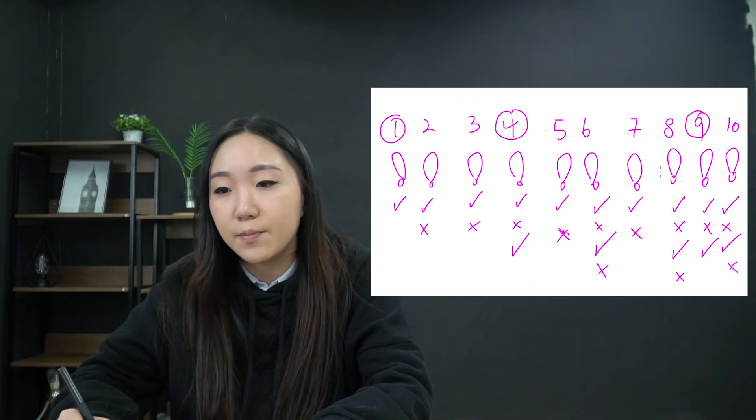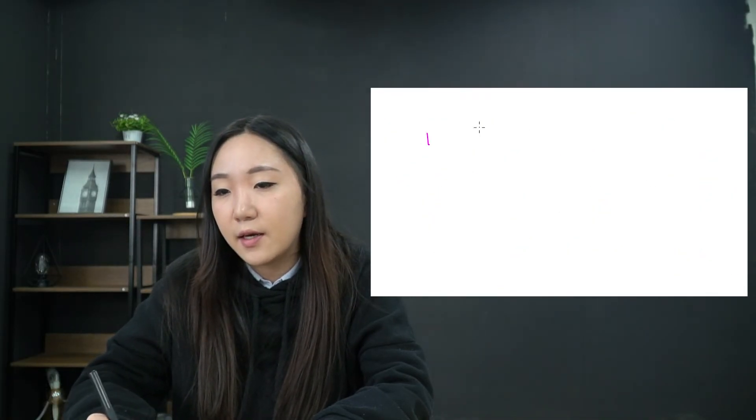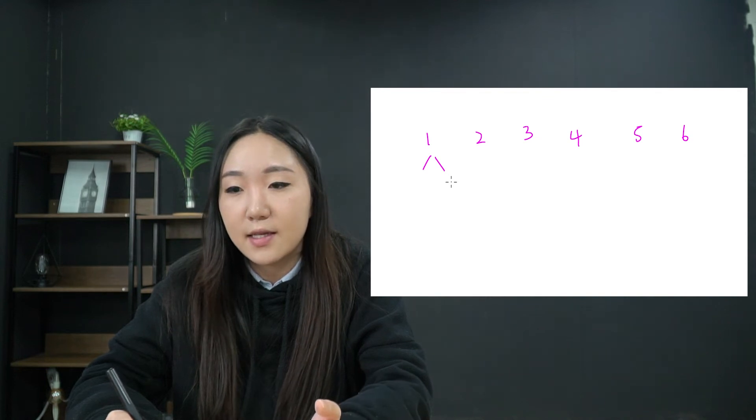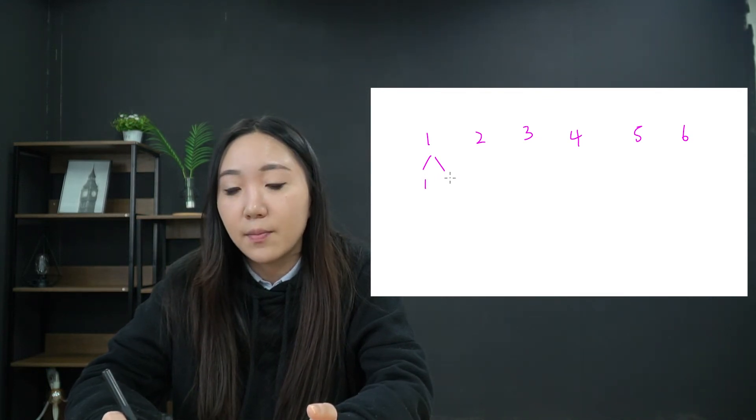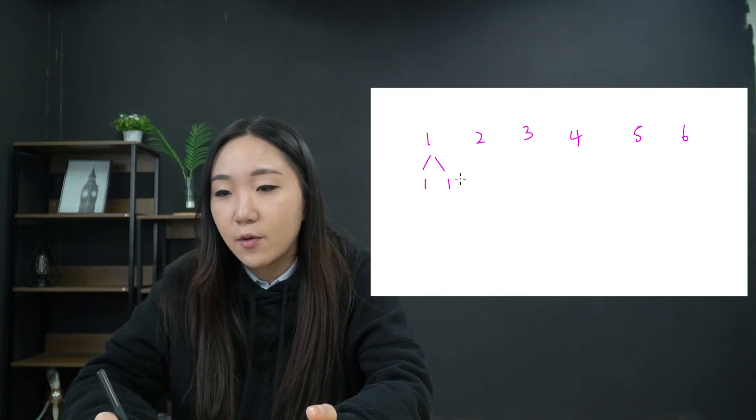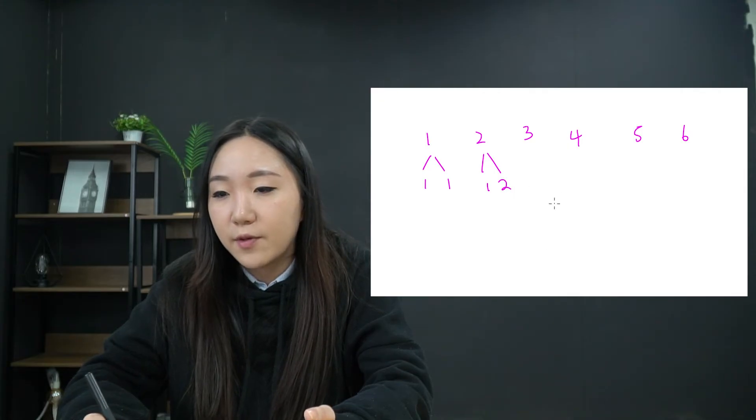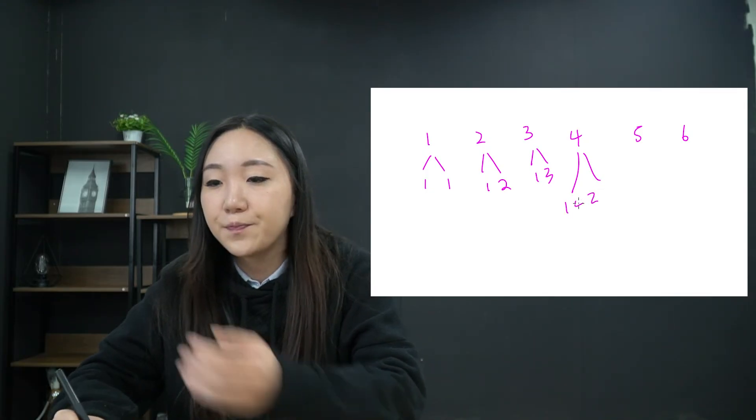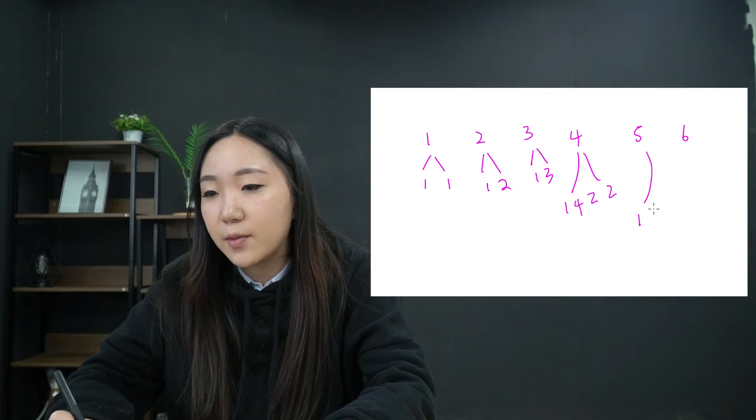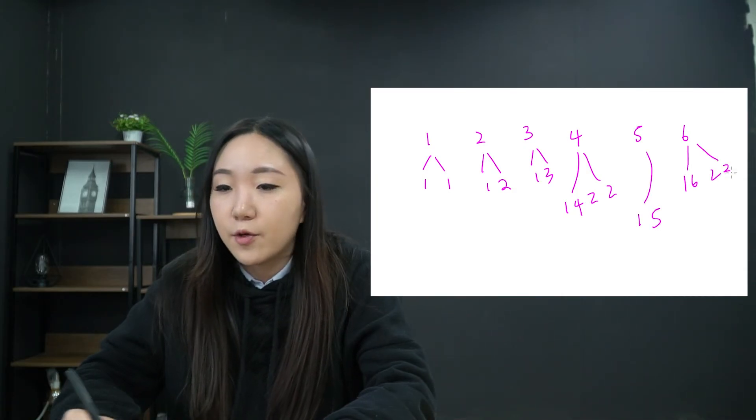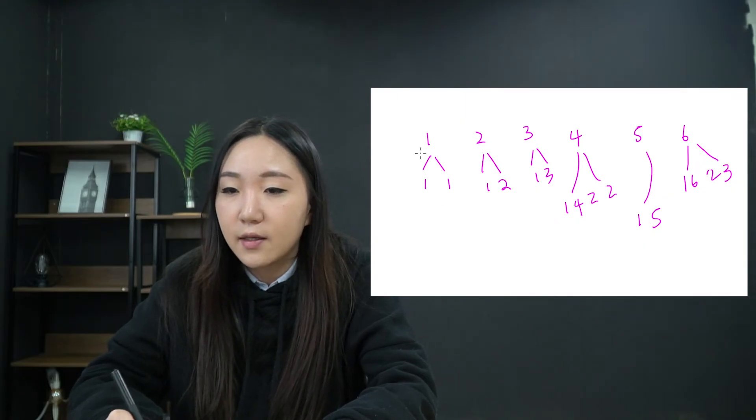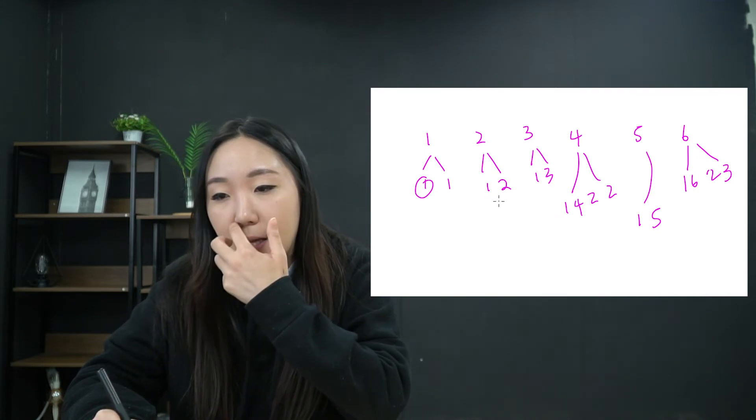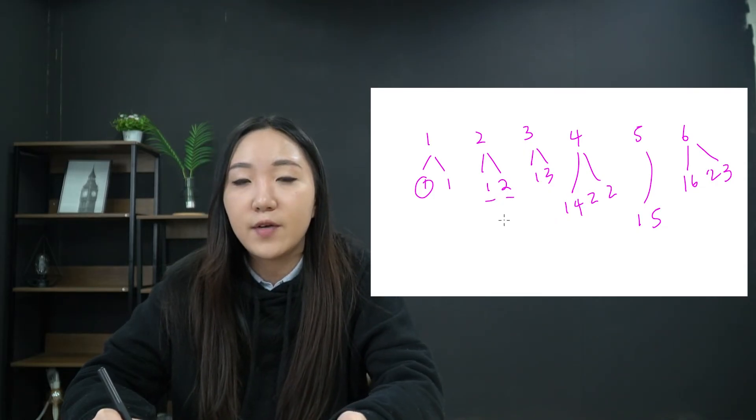And now we want to think about why it would be square numbers. So if we think about the nature of these numbers, then what we'll see is that one, if we split into the factors that you need with one to make the number, we've got one times one would make one, and it's got no other factors. With two, we've got one and two. With three, we've got one and three. With four, we would have one, two, and one times four, or two times two. With five, we would have one times five. And with six, we would either have one times six or two times three.